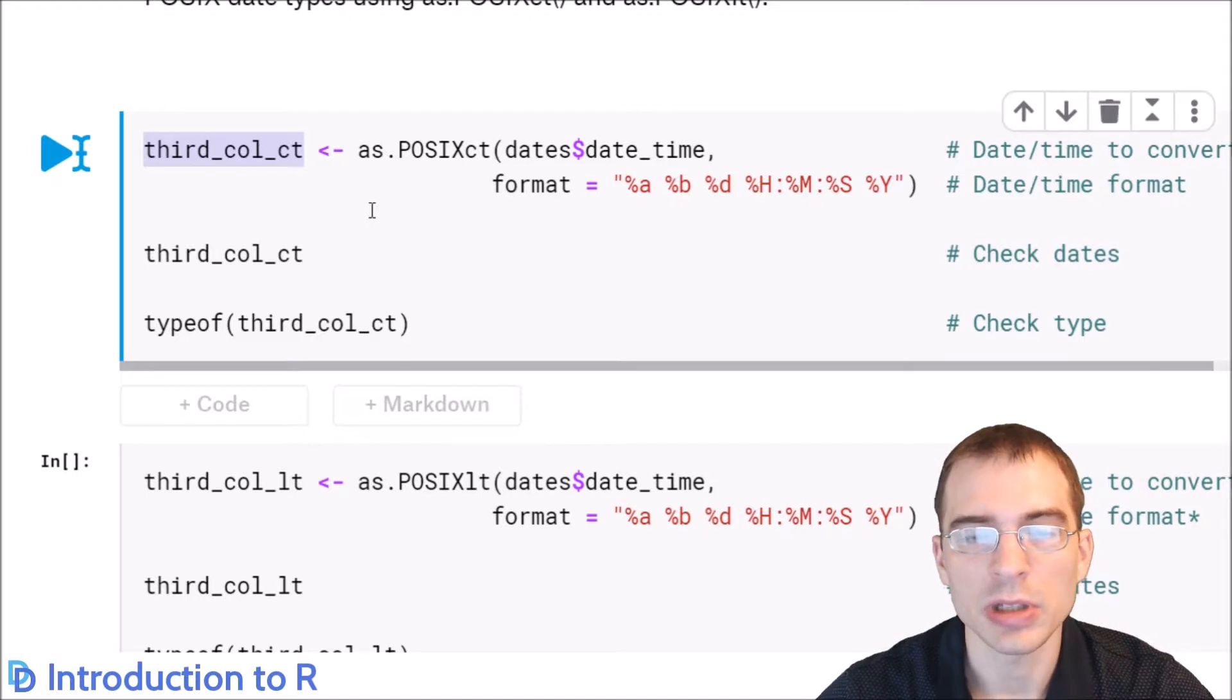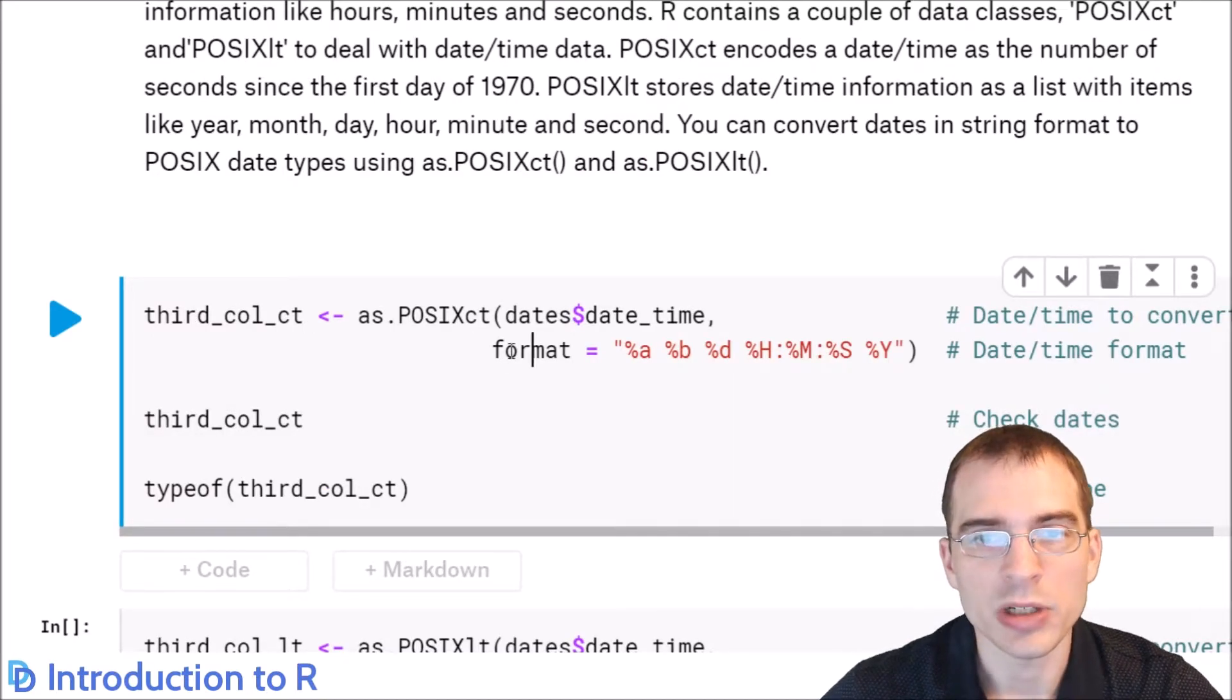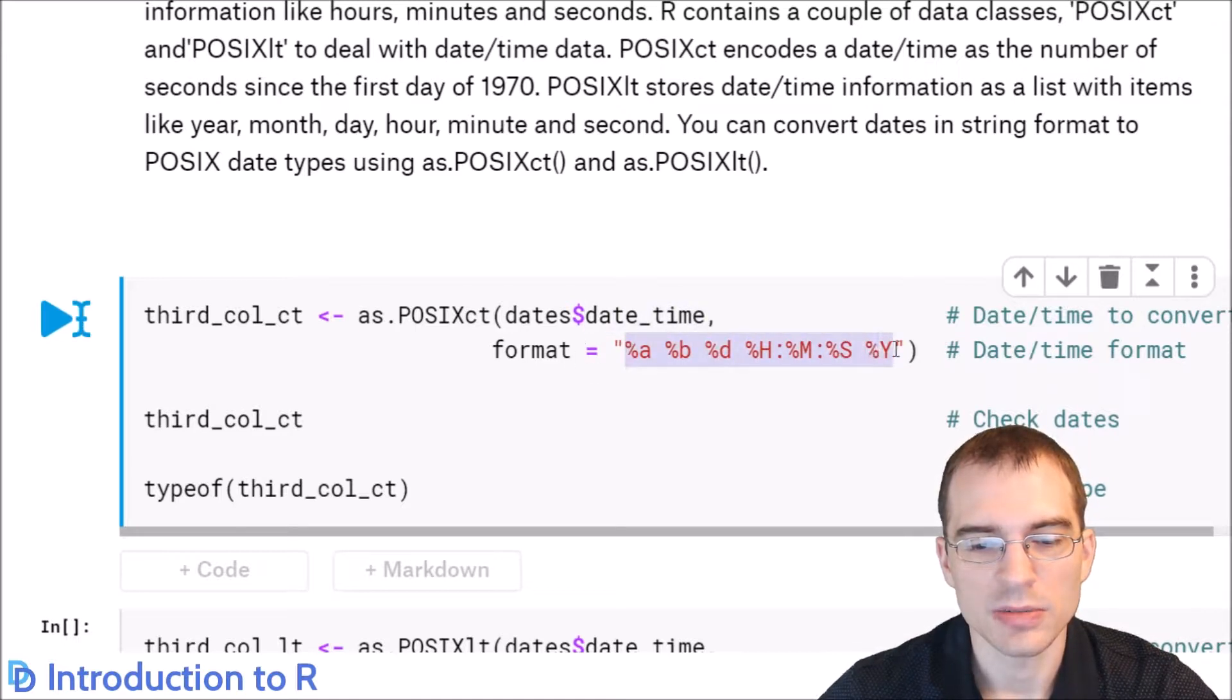We'll show how to do one of those conversions here. We're going to take the third column of the data set we loaded in earlier that included both date and time. We'll run as.POSIXct on that column. The column was called date_time. We have to pass in a format string that matches the exact format of the date-time column we're trying to convert. This string will do that. This is matching the day of the week, the month, the day of the month, hour, minute, second, and finally the full year.